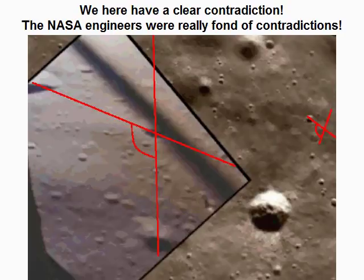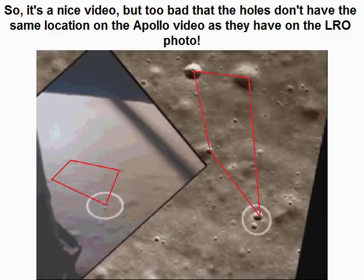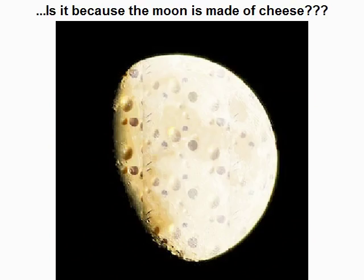The NASA engineers were really fond of contradictions. So it's a nice video, but too bad that the holes don't have the same location on the Apollo video as they have on the LRO photo. So we can ask a serious question: if the lunar holes have moved between Apollo's time and LRO's time, is it because the moon is made of cheese?